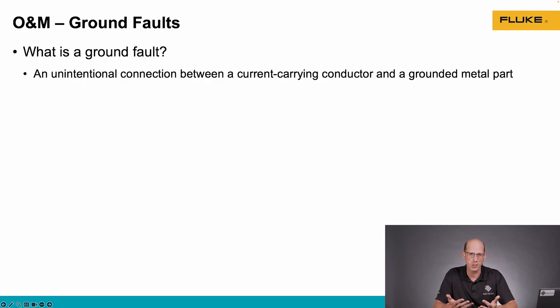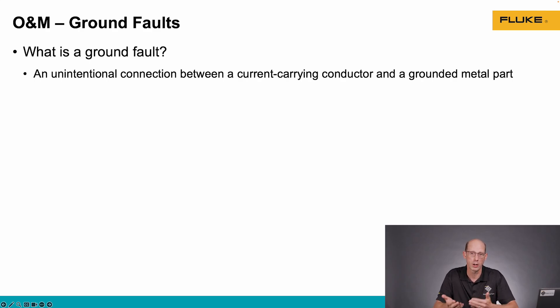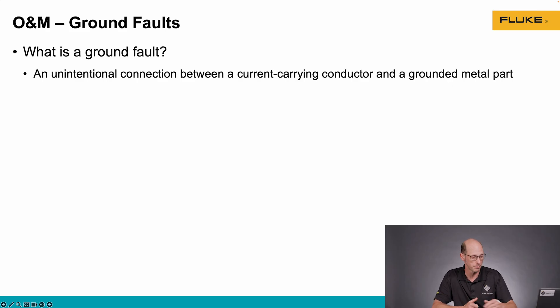So first off, what's a ground fault? A ground fault is simply an unintentional connection between a current carrying conductor and a grounded metal part. Basically the insulation has become compromised and current is flowing to ground.